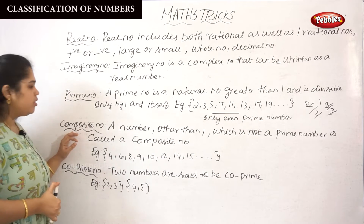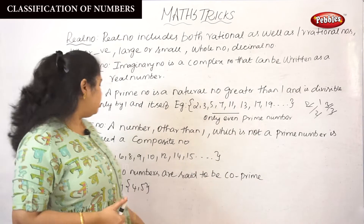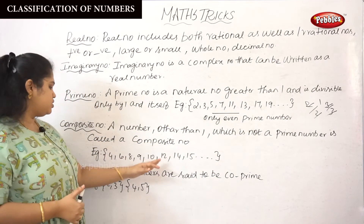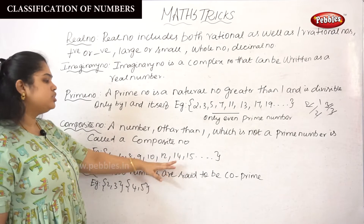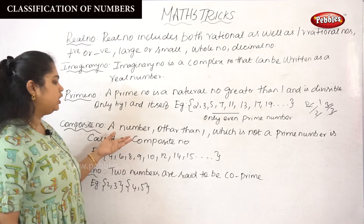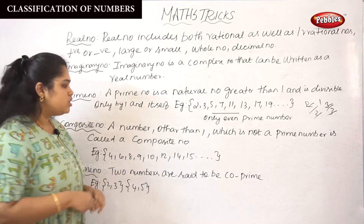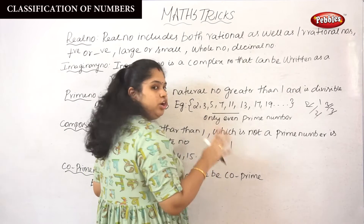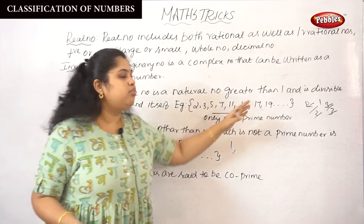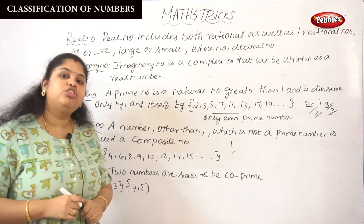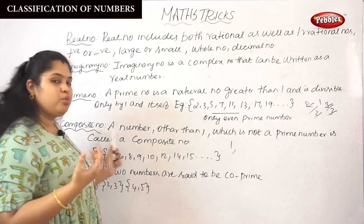Next, composite number. Any number other than 1 which is not a prime number is called a composite number. For example: 4, 6, 8, 9, 10, 12, 14, 15 are composite numbers. We cannot include 1 and we cannot include prime numbers — every other number is called a composite number.